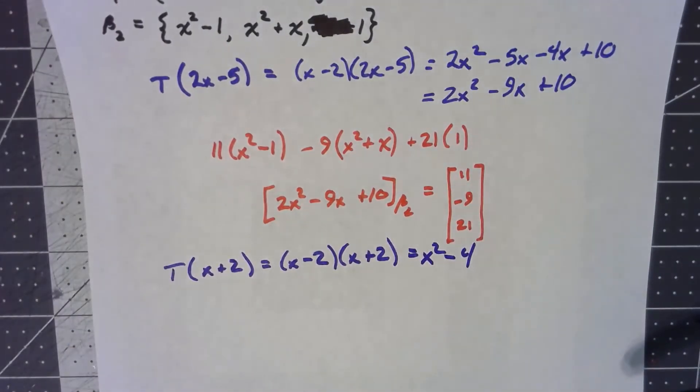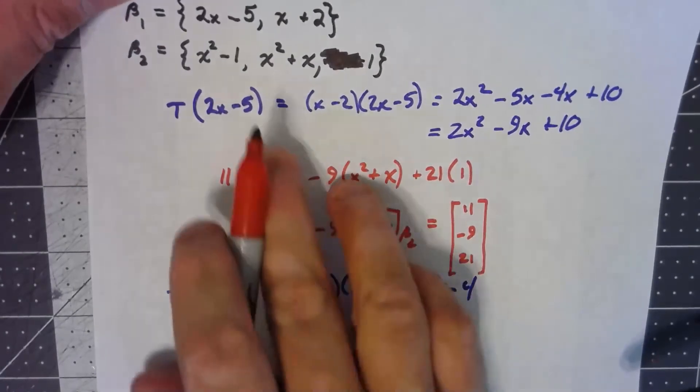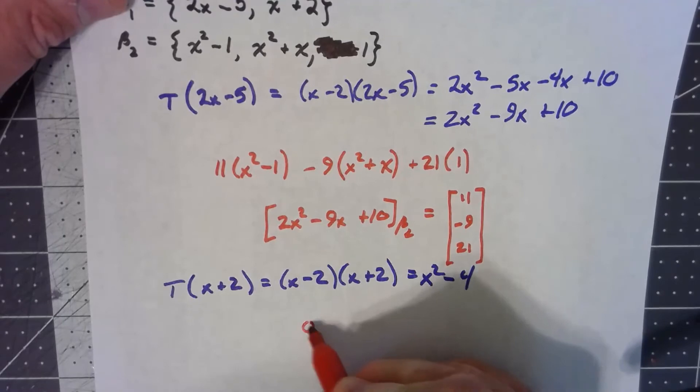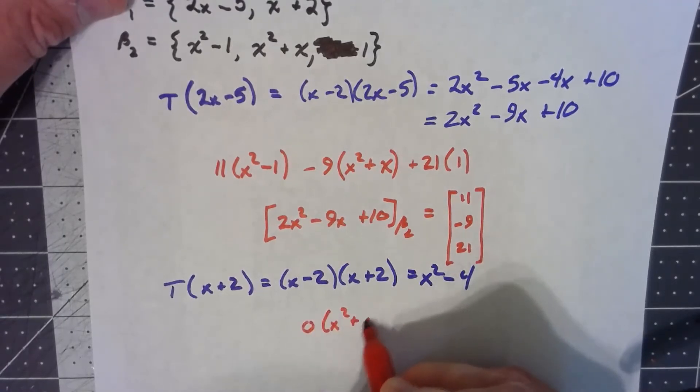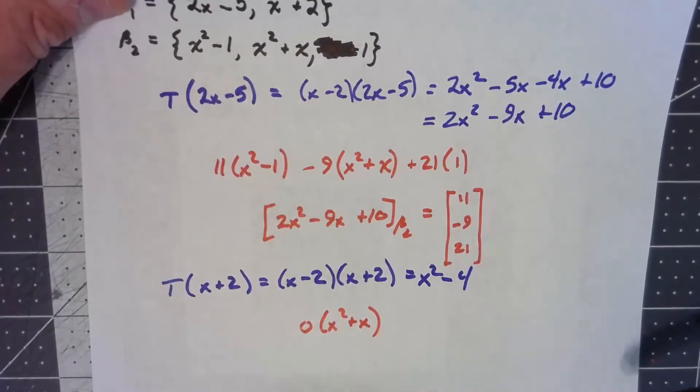We can go through a similar process. There is no x term, so that must mean I have 0 of the middle term. Since I've got 0 of the middle term and I've got an x squared, that must mean I have 1 of the first thing.